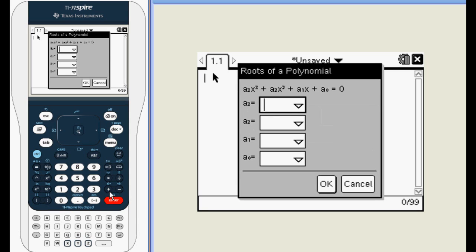From here it's easy. Just enter the coefficients from the largest exponent to the smallest. In this case, they are 1, negative 6, 11, and negative 6.